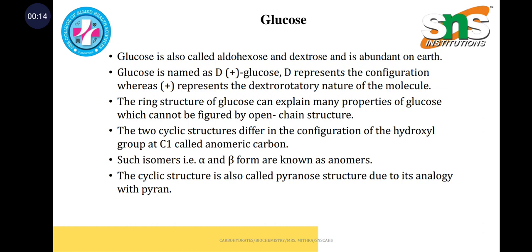First we want to see glucose. Glucose is also called aldohexose and dextrose, and it is abundant on earth. It is named as D-glucose, where D represents the configuration and plus represents the dextrorotatory nature of the molecule. Glucose may be of ring structure or open chain structure.